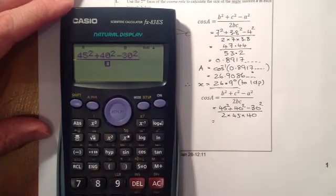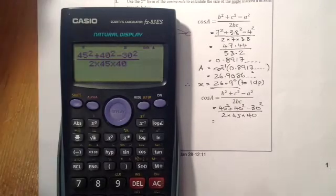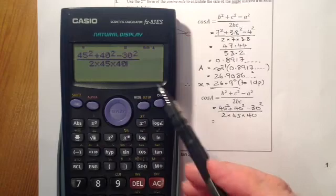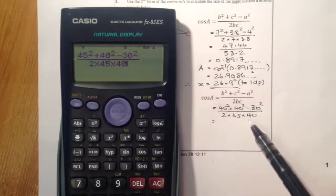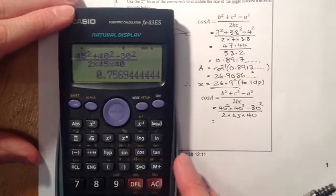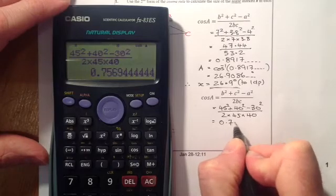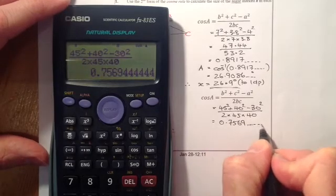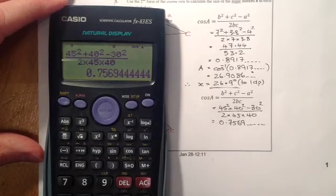I'll put 2 times 45 times 40. There I've got everything in the calculator, the way it's shown in my working here. If I press equals, I should get that value there. That'd be 0.7569 and plenty of characters there, and that's for cosine of A.